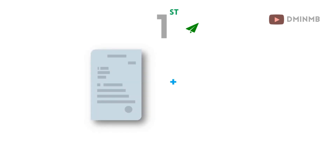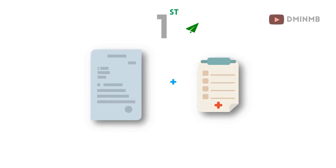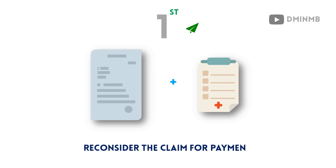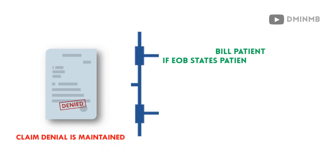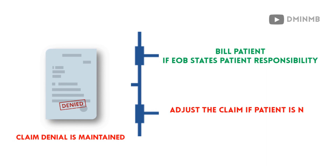The first follow-up would be sending a first level appeal or reconsideration form along with medical records, requesting the payer to reconsider the claim for payment. If the appeal is upheld and the denial is maintained, bill the patient if it is patient responsibility.